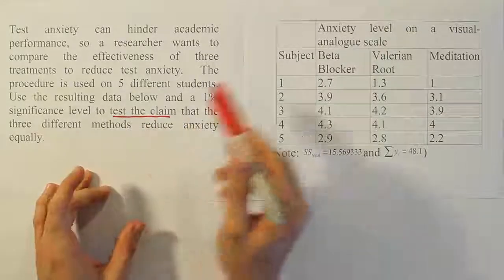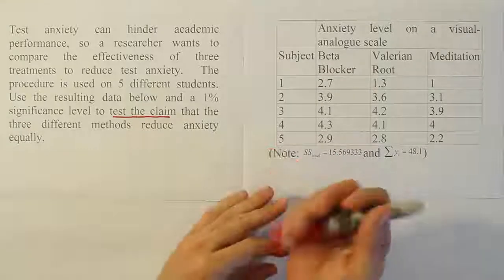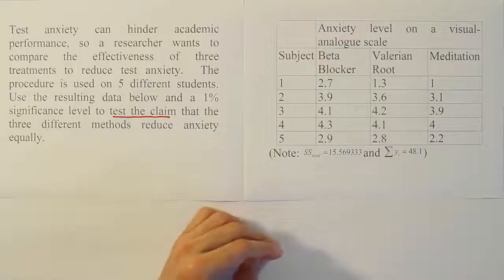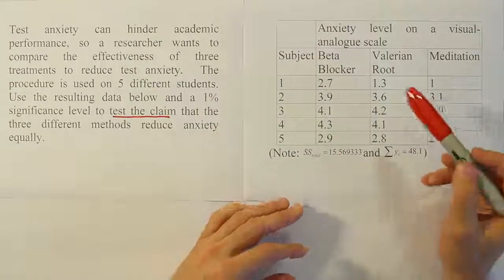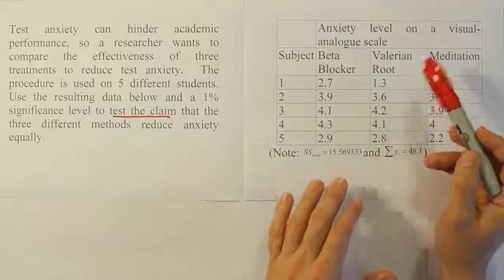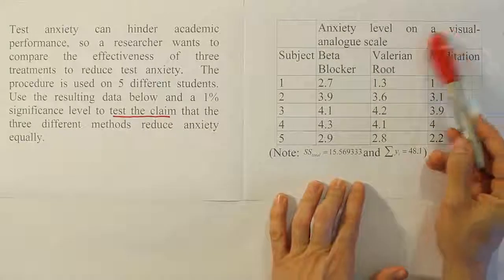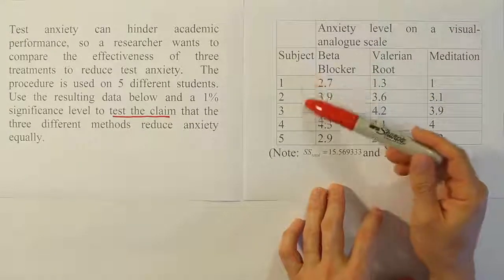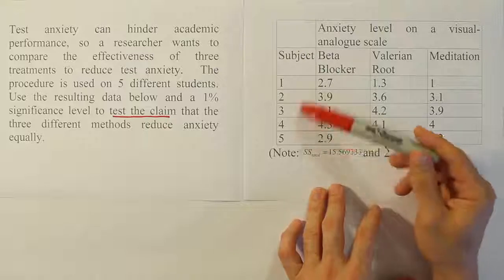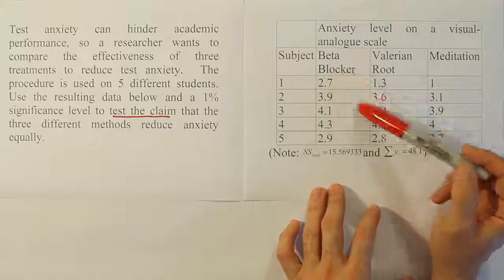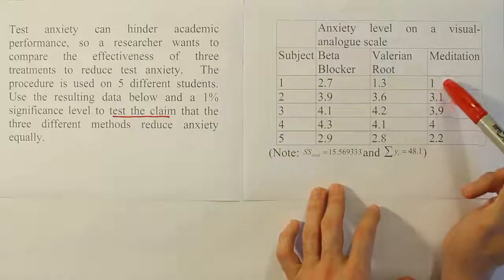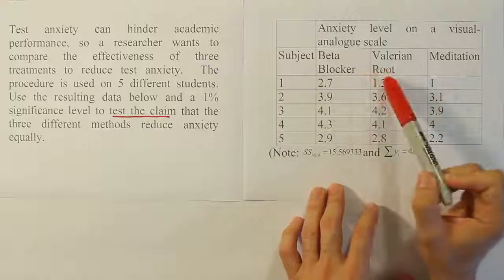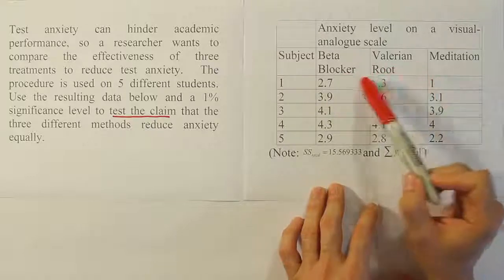When we look at the layout of the data, it looks like a randomized block design experiment. What we have here is the anxiety level on a visual analog scale, with subjects 1 through 5 — those are the five different students — and each of them uses the treatments. Every single subject gets to try each treatment.